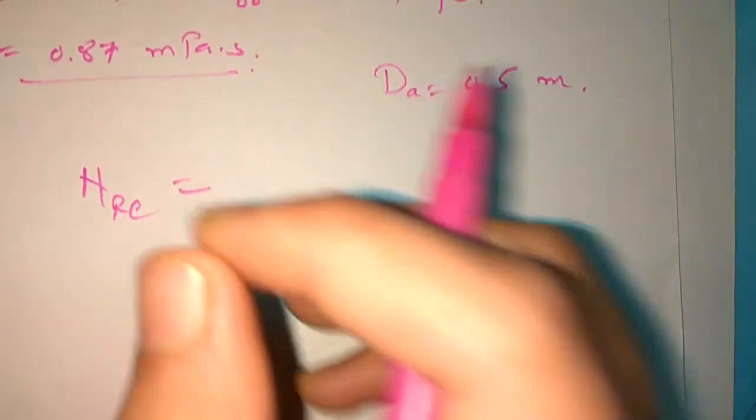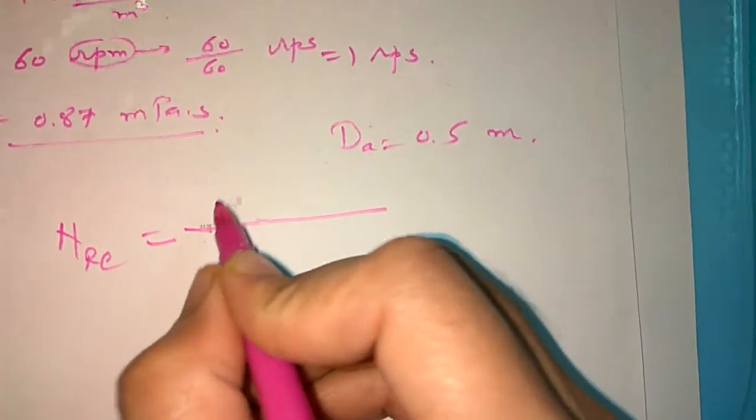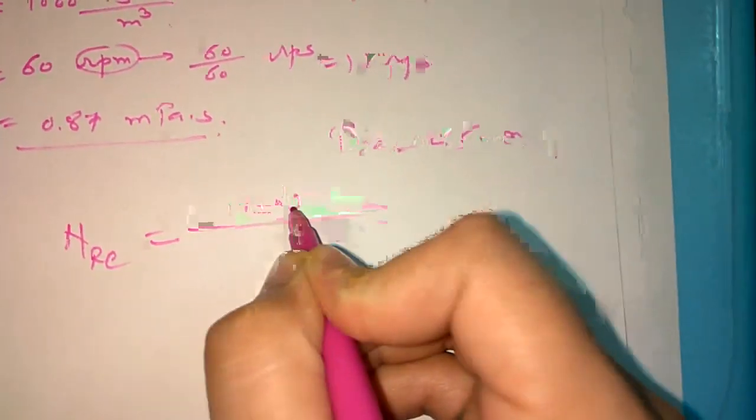So D_a suppose we take 0.5 meters. Now we know that Reynolds number is a dimensionless number, so there is no dimension for the Reynolds number. So whatever we have, we have to take into account and we have to calculate.